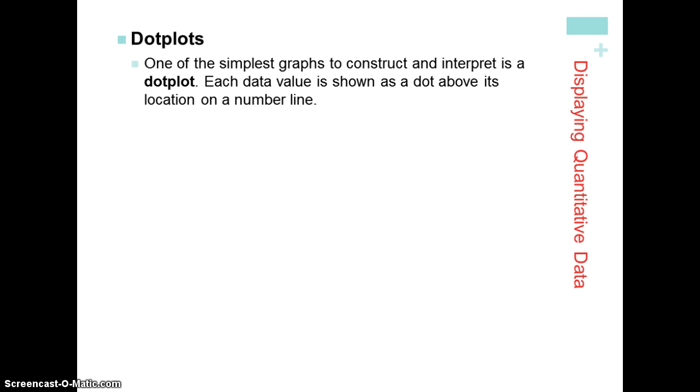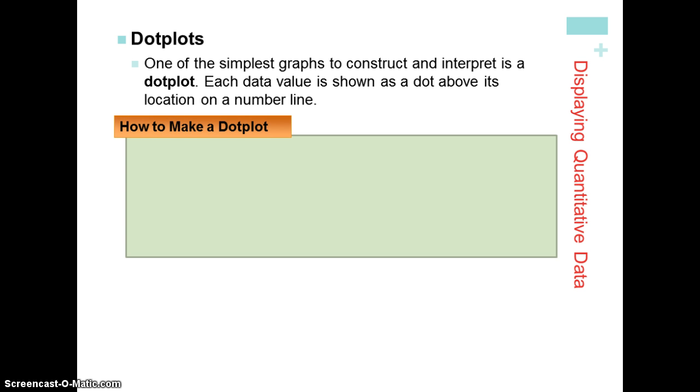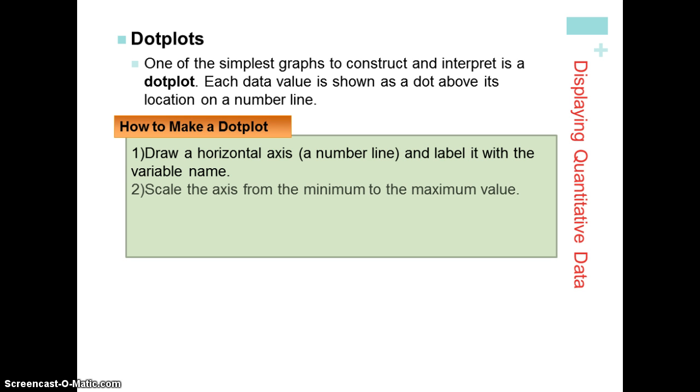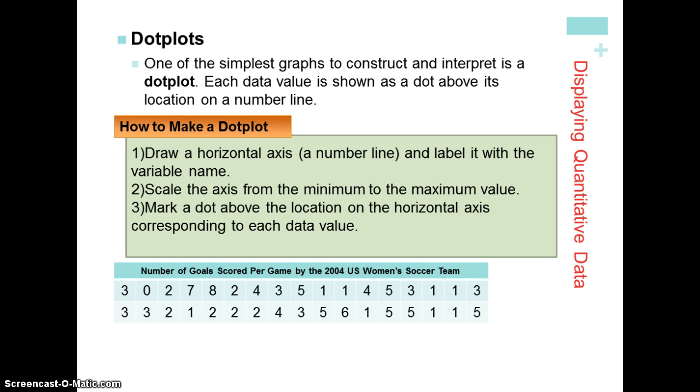Dot plots are one of the simplest graphs to learn and to complete. Each data value is shown above the line, which is an axis showing all the possible data values. We're going to start with a horizontal axis, label it with a variable name, scale our axis, and then count frequency in the vertical direction by stacking dots above each of the different values.